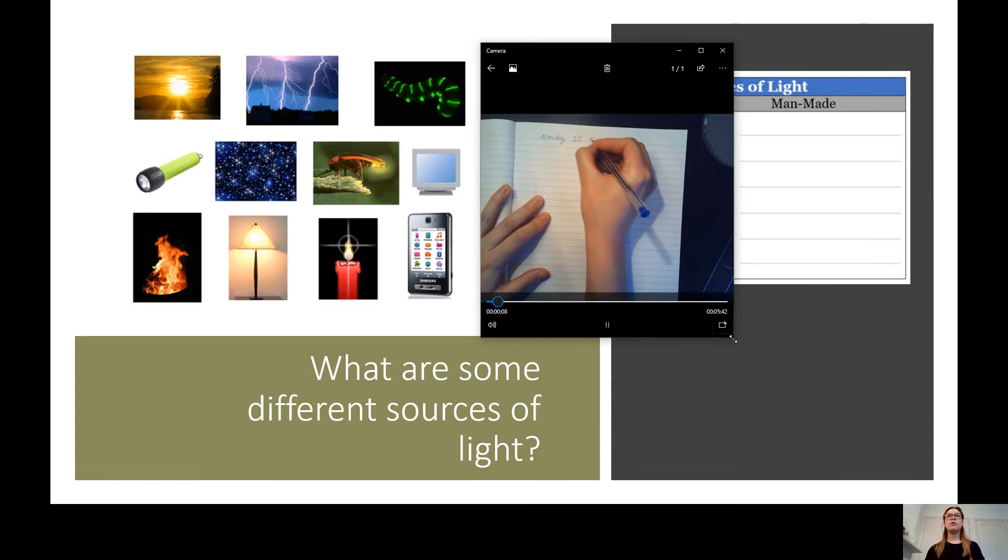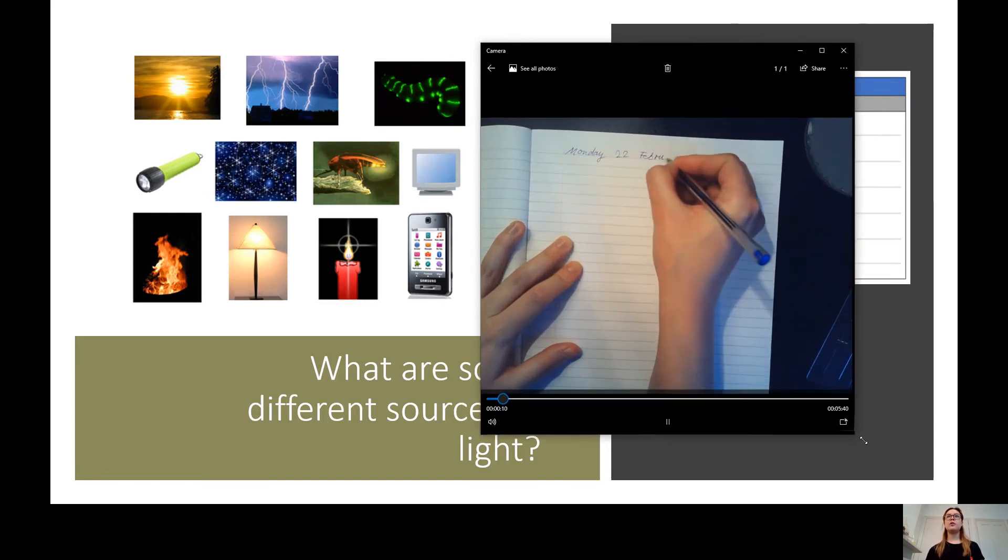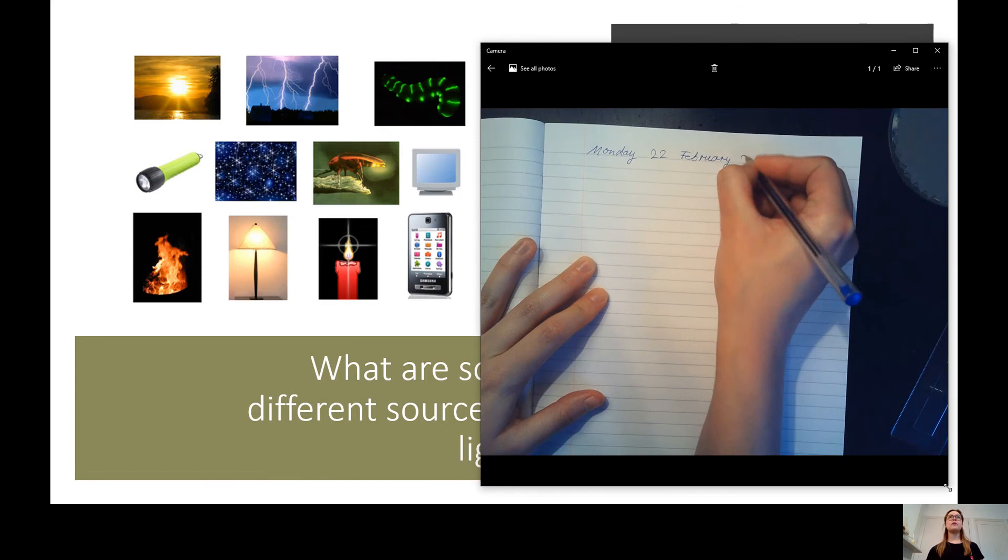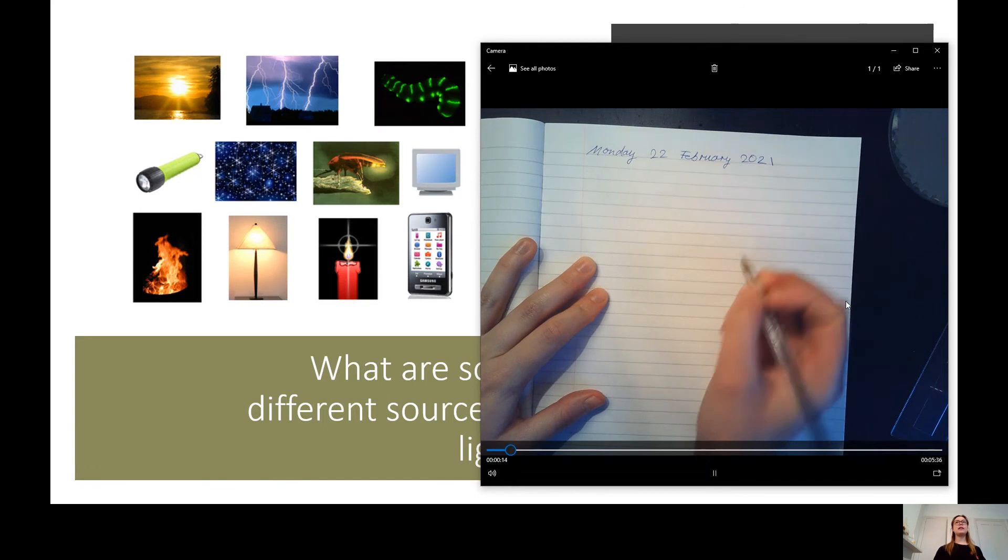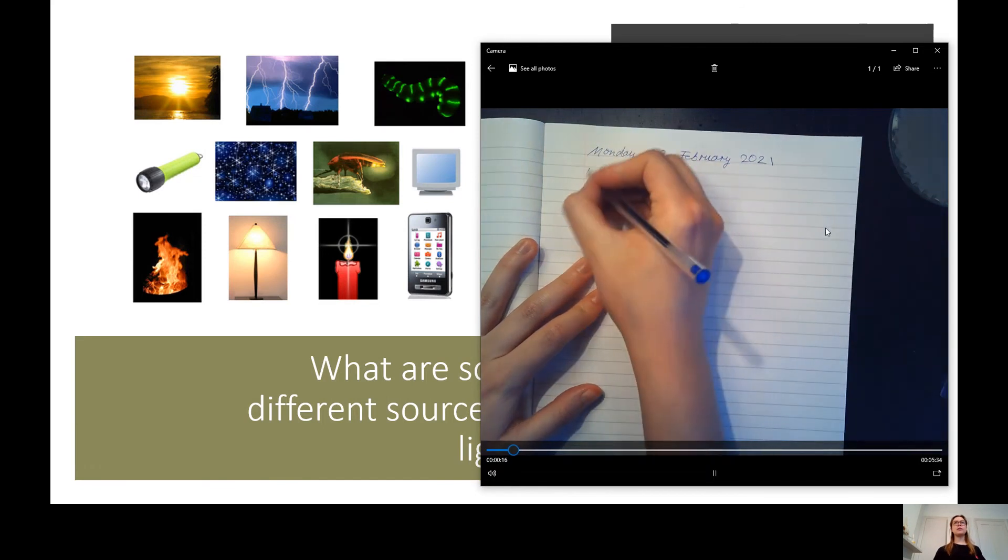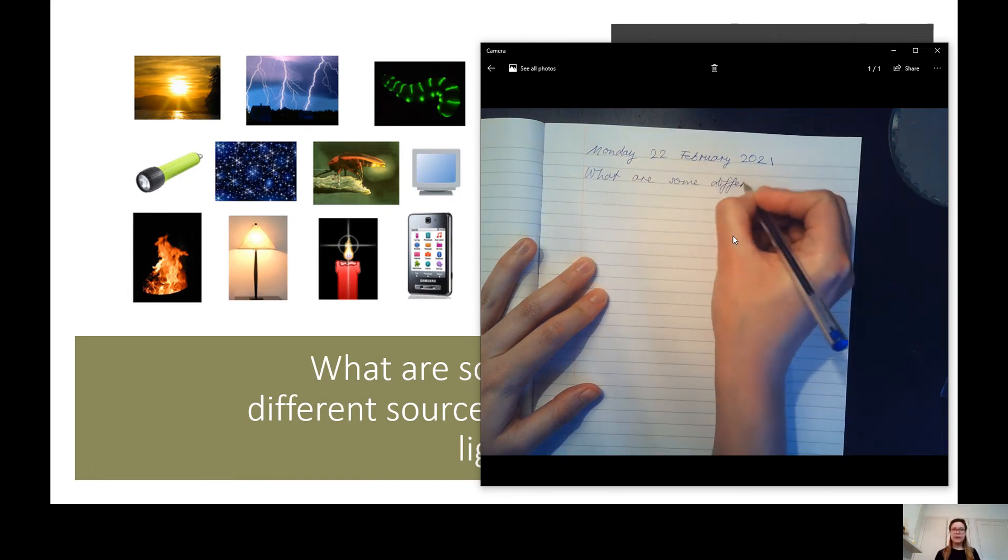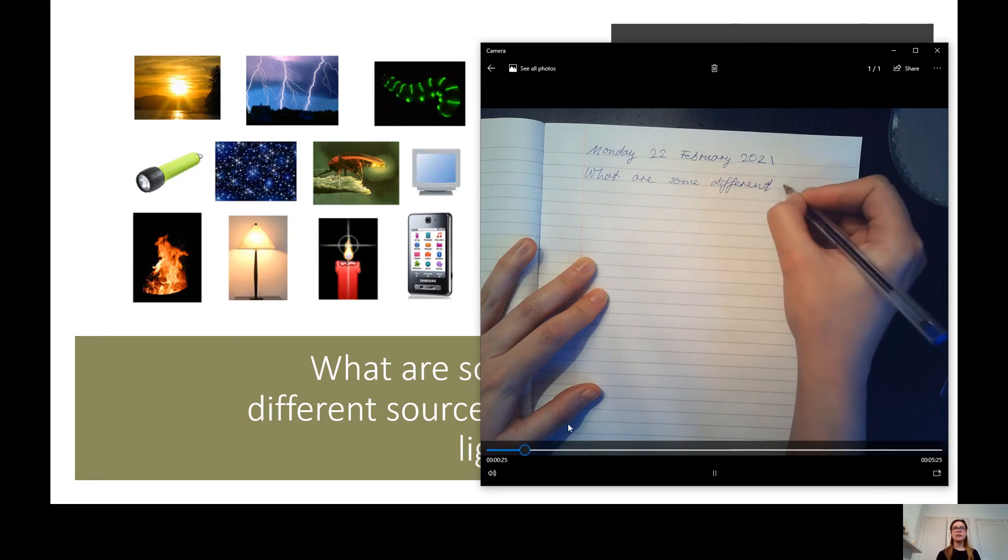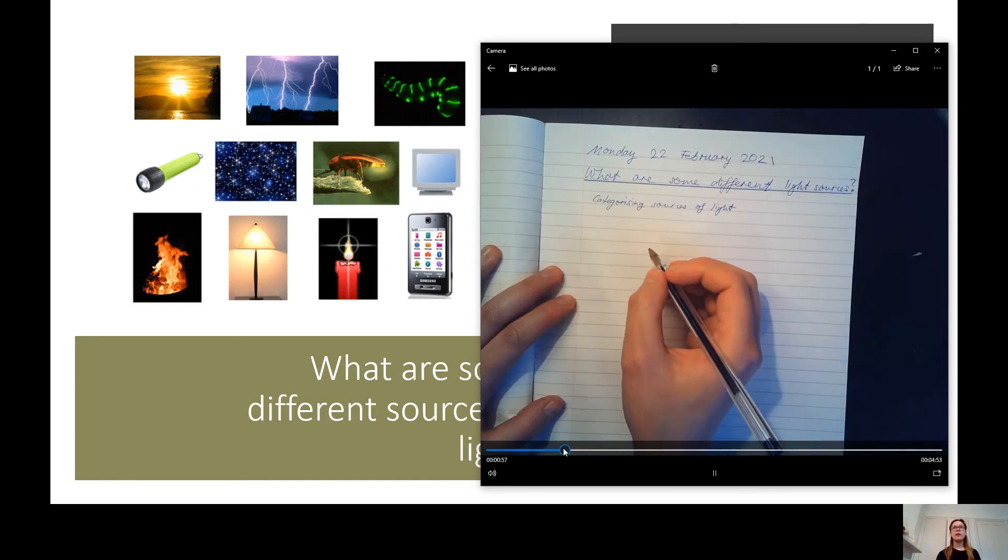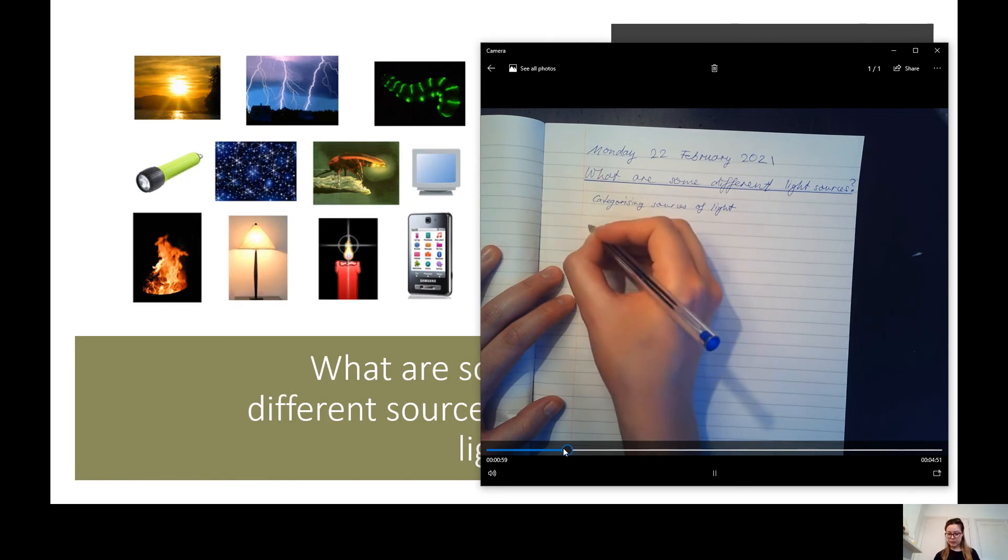So I have modelled this for you in this video here for you to see. Right, before I drew the table, I of course drew today's date, which is Monday, the 22nd of February, 2021. And written the question, what are some different light sources? Then I've underlined it using a ruler, and I've written the subtitle, which is categorising sources of light. Then I need to write my two headings for my two columns, natural and man-made.